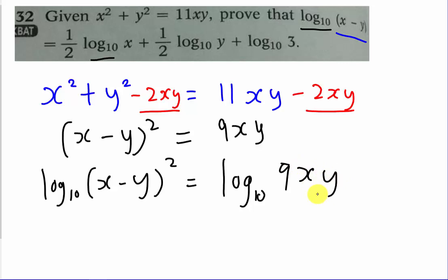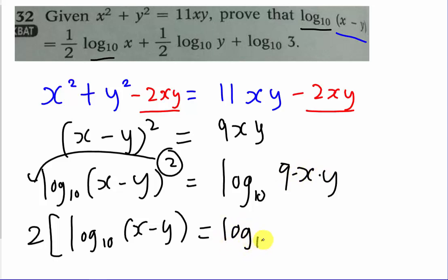So I add the log base 10 of x minus y squared and add the log base 10 for 9xy. The rule of log tells me that the power I can move in front, so basically I have two times log base 10 of x minus y. Then equals log base 10 of 9xy, which is log base 10 of 9 multiple x multiple y.